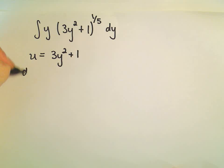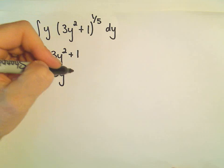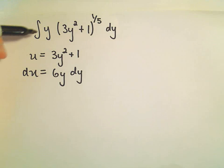So our du, let's see, the 2 will come out front, so we'll get 6y to the first, and then we'll tack on our dy. So this is one of the things you have to be careful about. We're doing anti-derivatives, but to do that, we also have to do derivatives.